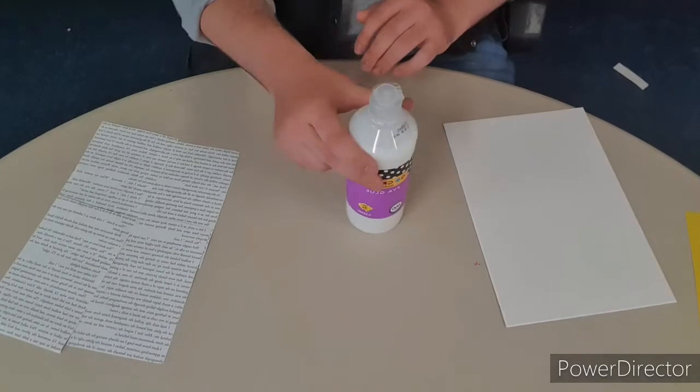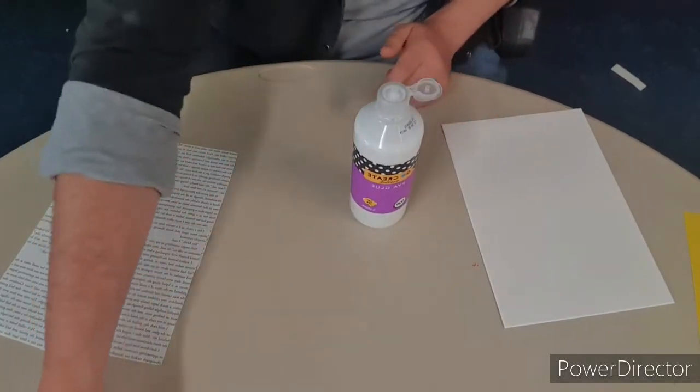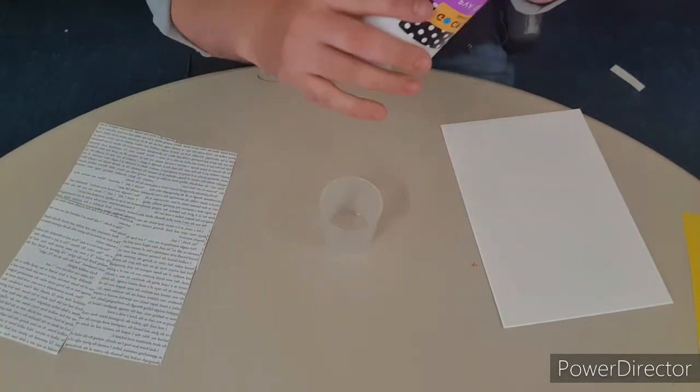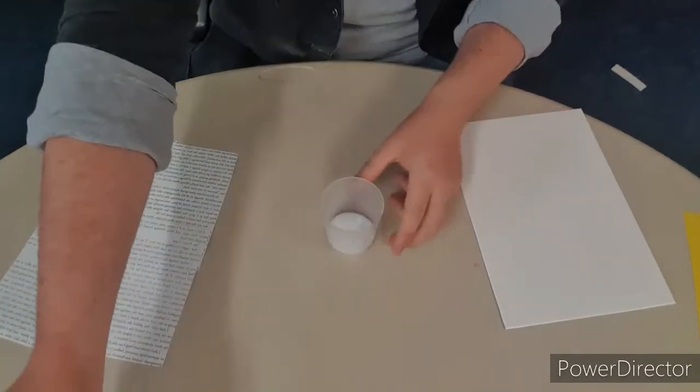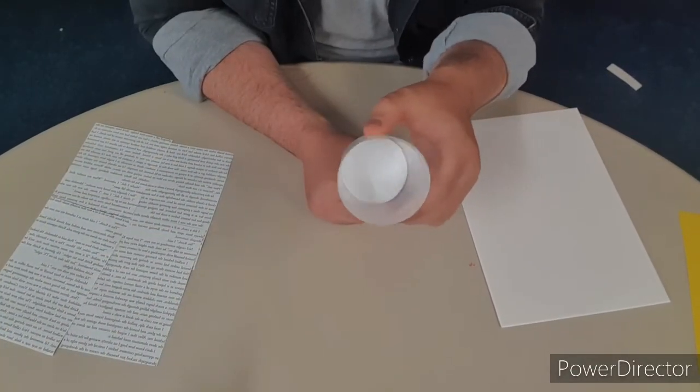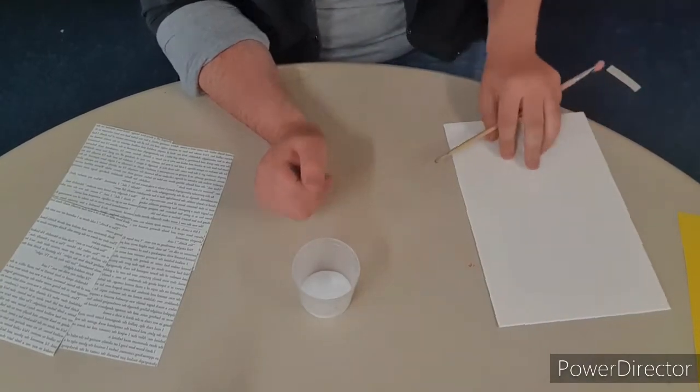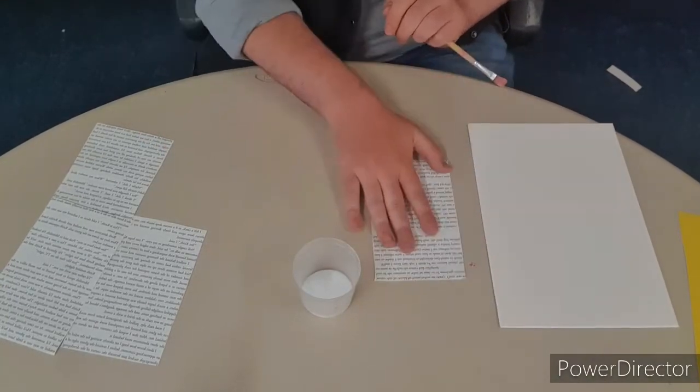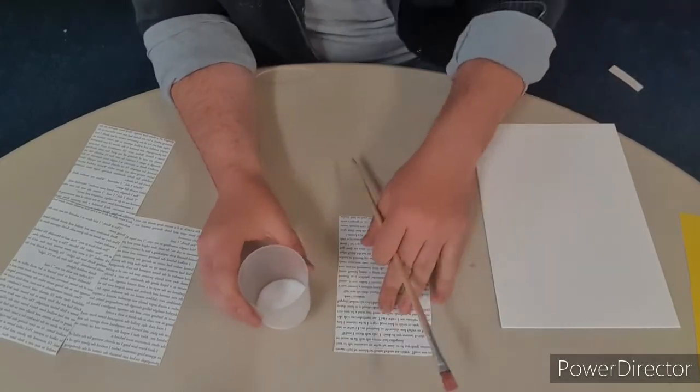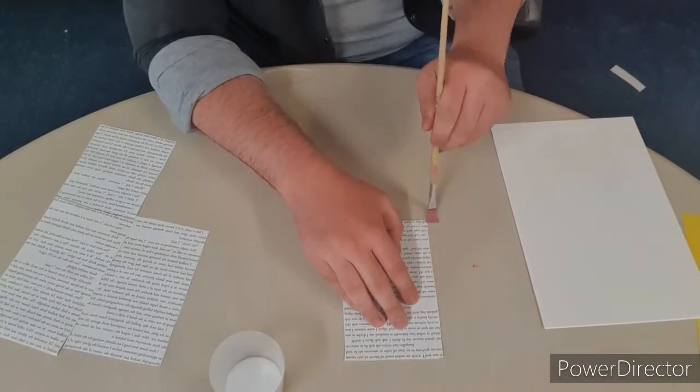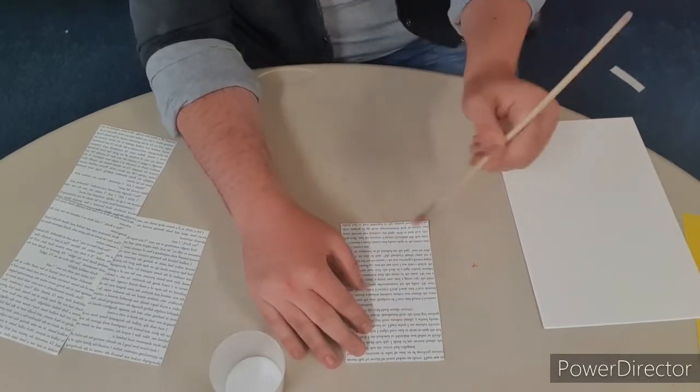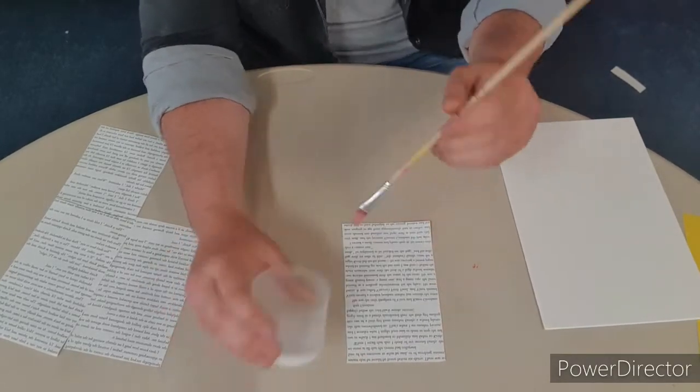We're going to get our trusty PVA glue, get our pot or holder, squirt a bit in. We don't need much, we don't want to waste anything, so I've only put a dab in there. Trusty glue brush, check. Now grab your words. Very important, we make sure we get around all the edges. I'm going to do every single edge, all down and around, then all over.